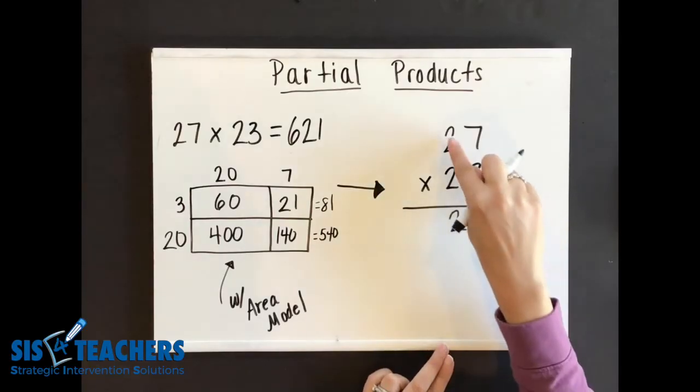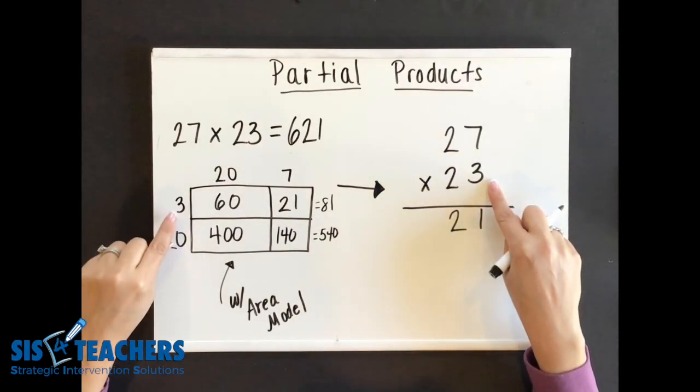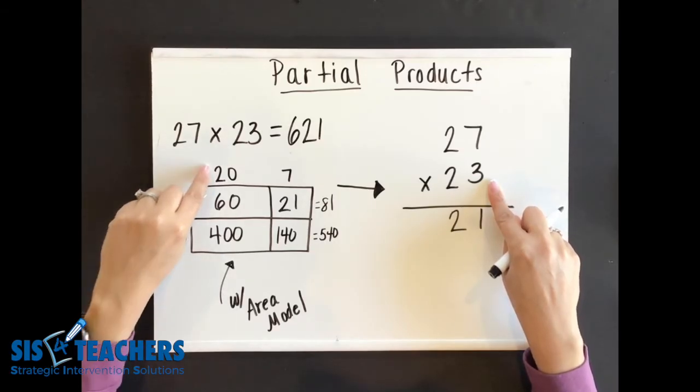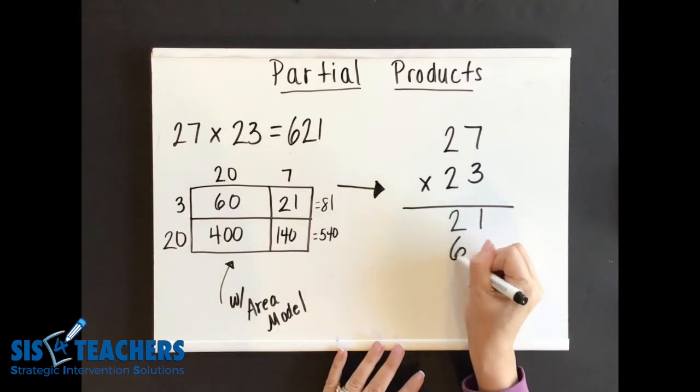Now, some students might say three times two, but is that really three times two? Let's look over here. Three times, oh, it's actually three times 20. So three times 20, we know equals 60.